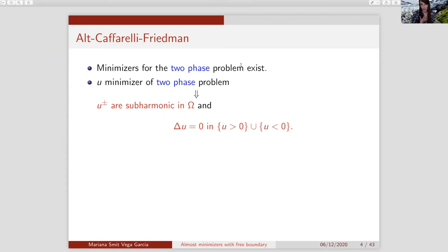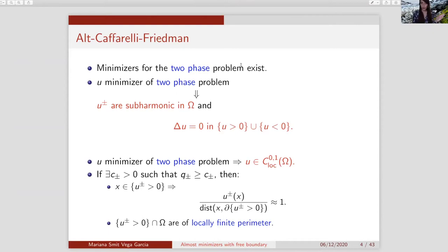As in the one-phase case, a minimizer of the two-phase problem is locally Lipschitz, which will be our goal for almost minimizers as well. If q-plus and q-minus are both bounded away from zero, then u-plus or u-minus grow like the distance to the corresponding piece of the free boundary. The positivity and negativity sets are locally of locally finite perimeter. A lot of information comes from the fact that you actually have PDEs.